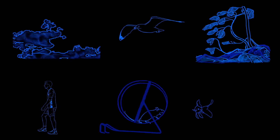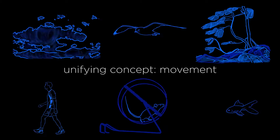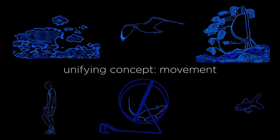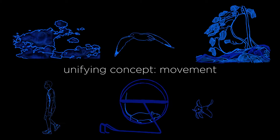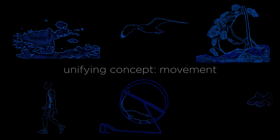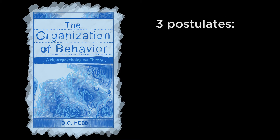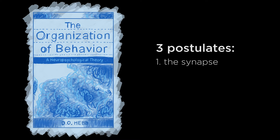All of these stimuli share a unifying concept: movement. How these independent stimuli and their unifying concept are processed, learned, and retained as memories is a question that can be addressed by considering Donald Hebb's three postulates. Hebb was a psychologist whose work formed the foundation of biopsychological research on behavior, the conscious state, learning and memory, motivation and attention, and other phenomena in his book The Organization of Behavior. Hebb presented an outline in the form of three postulates: the synapse, the cell assembly, and the phase sequence.